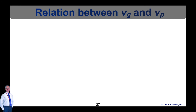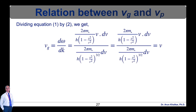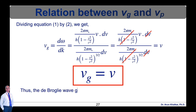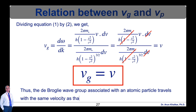Dividing equation 1 by equation 2, we get vg = dω/dk. Putting in the values of dω and dk from equations 1 and 2, the common terms cancel and we get vg = v. Thus, the de Broglie wave group associated with an atomic particle travels with the same velocity as that of the particle itself in a non-dispersive medium.